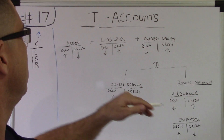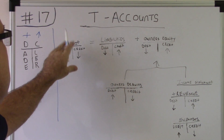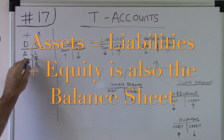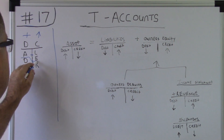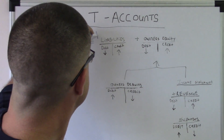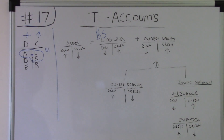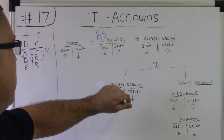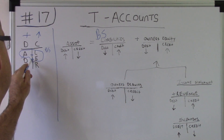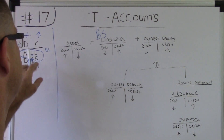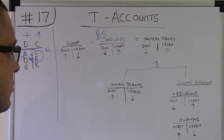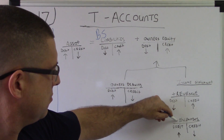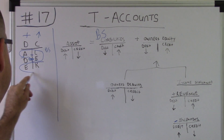In the book they say assets equal liabilities plus equity — that is the basic accounting equation. The DCAidler has that in it too, because I use an equal sign: assets equal liabilities plus equity — that's the balance sheet. Then off of owner's equity you have the drawing account, which is basically negative equity. And then you have the income statement, which is revenues minus expenses.